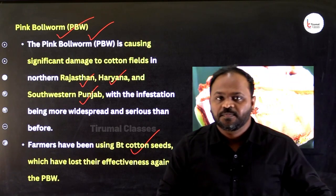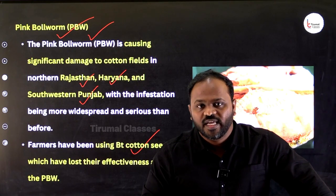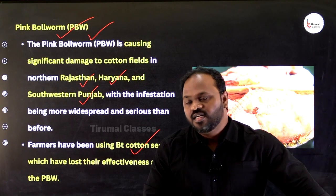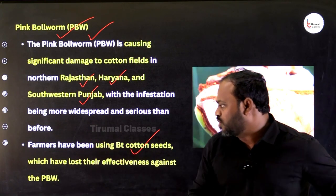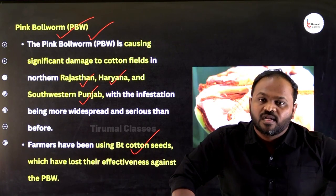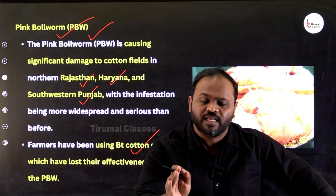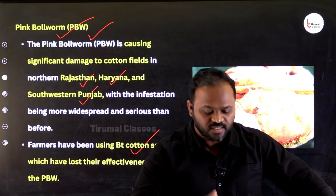A simple exam question: the Pink Bollworm is associated with which crop? It is a pest for cotton which leads to reduced cotton production in India. Both the Pink Bollworm and the Yarkovsky Effect are very important current affairs topics.